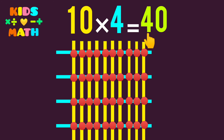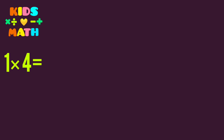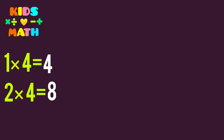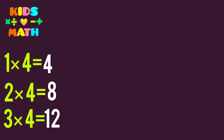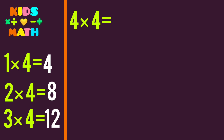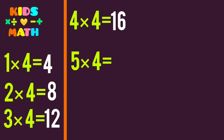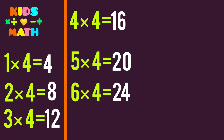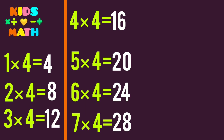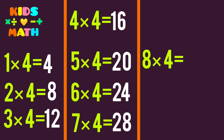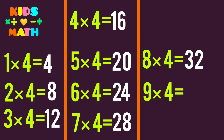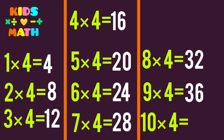Let's review once to learn well. 1 times 4 equals 4. 2 times 4 equals 8. 3 times 4 equals 12. 4 times 4 equals 16. 5 times 4 equals 20. 6 times 4 equals 24. 7 times 4 equals 28. 8 times 4 equals 32. 9 times 4 equals 36. 10 times 4 equals 40.